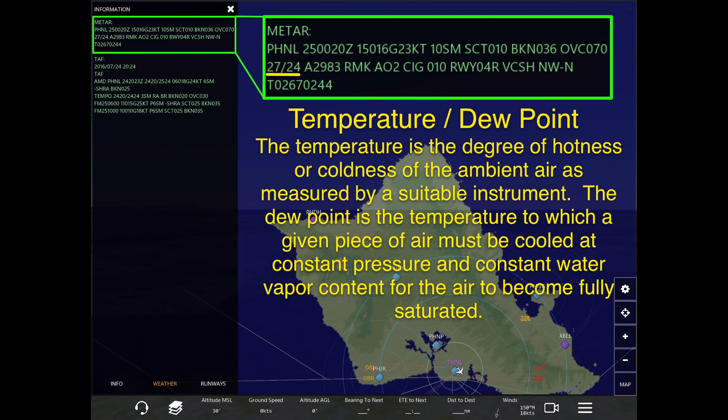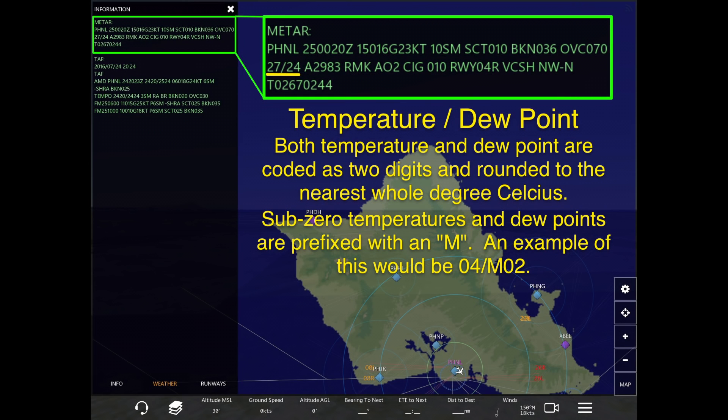The dew point is the temperature to which a given piece of air must be cooled at constant pressure and constant water vapor content for the air to become fully saturated. Basically, the dew point is the temperature at which a given concentration of water vapor in the air will form as dew.